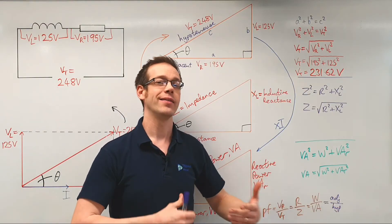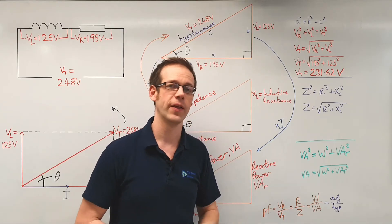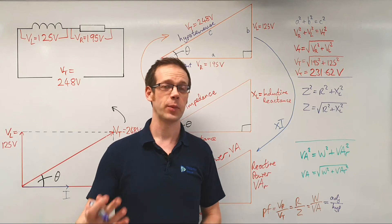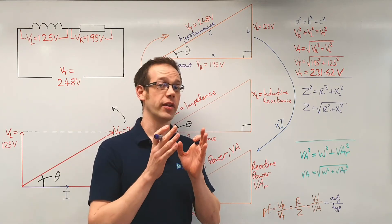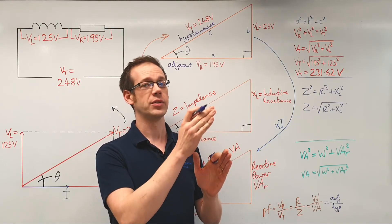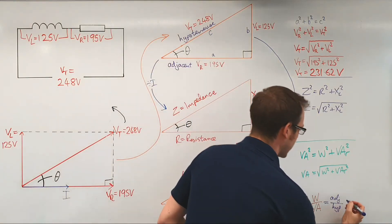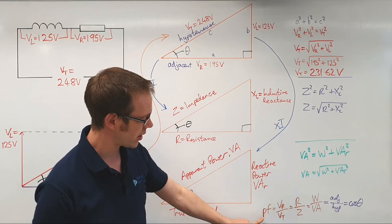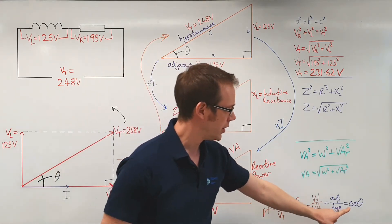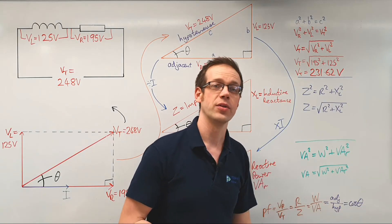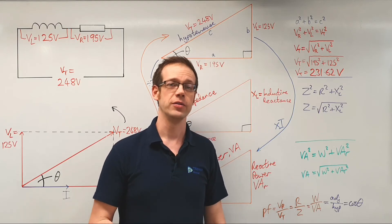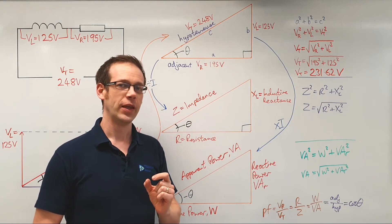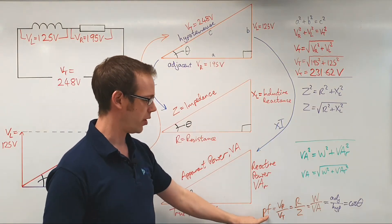Now in trigonometry, if you take the adjacent of a right-angle triangle and divide it by the hypotenuse, you come up with one of the three trigonometric identities. If you think back to your school days and remember SOH-CAH-TOA, you've got the CAH part in the middle, which means the cosine of theta is equal to the adjacent divided by the hypotenuse. So what we're actually doing here every time we're finding the power factor is we're finding the cosine of the angle theta — and here's our angle theta. So the power factor is equal to the cosine of theta, where theta is the angle that the current and the voltage are out of phase by.